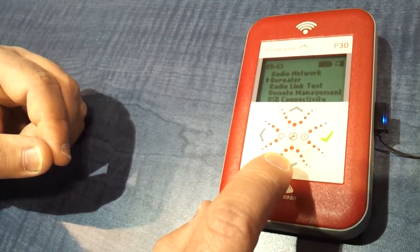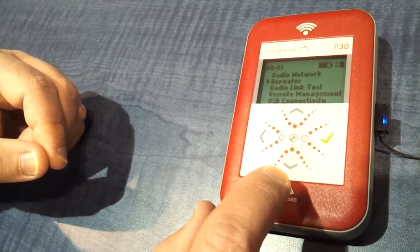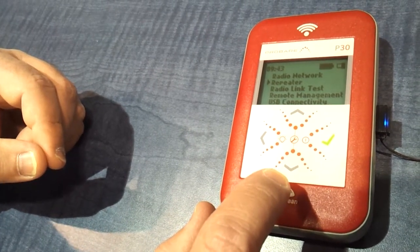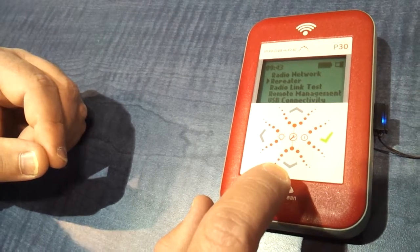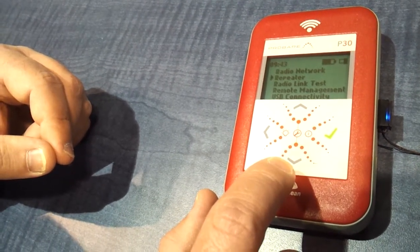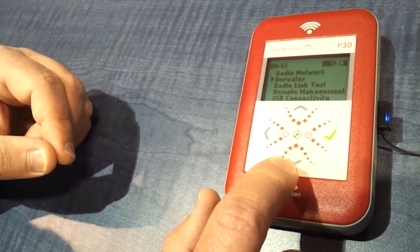The radio link test with a second P30 or an EPM 300 from EnOcean you can do a radio link test. During installation put one device at the place of a controller and the other at the place of a switch or a sensor. And you will get reliability data, the radio link quality with a four digit bar graph that we had before.